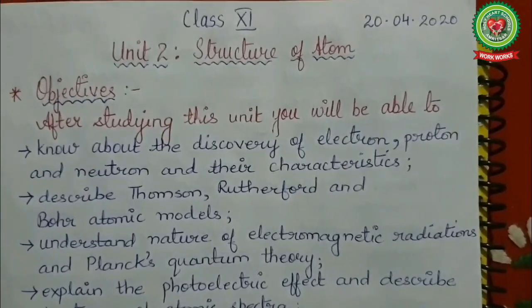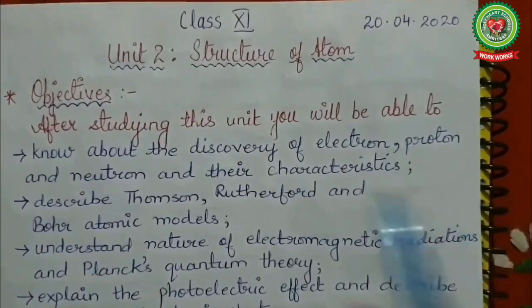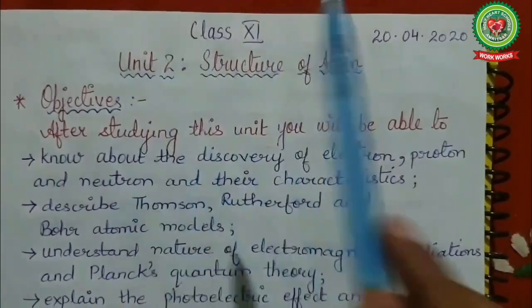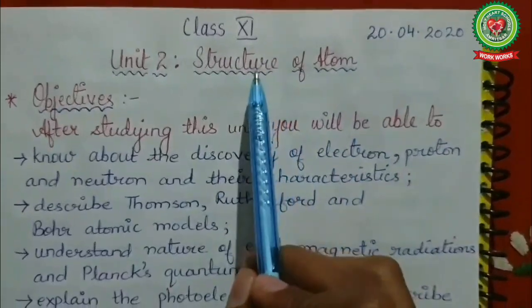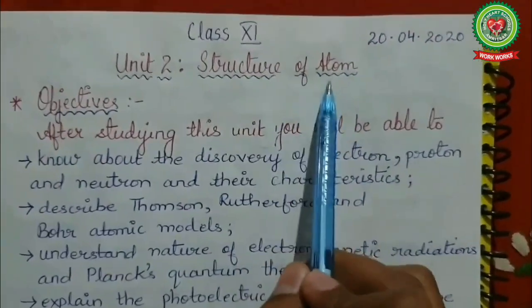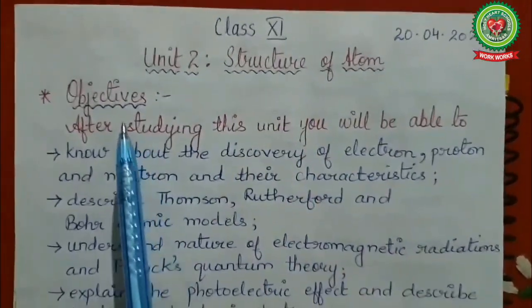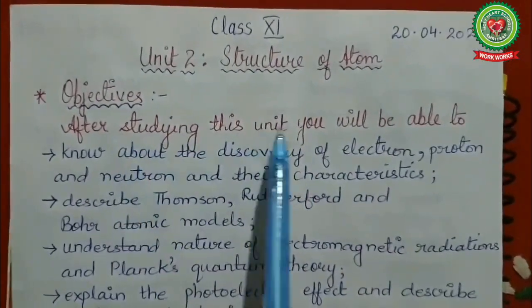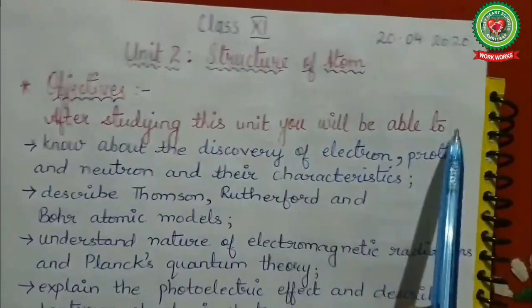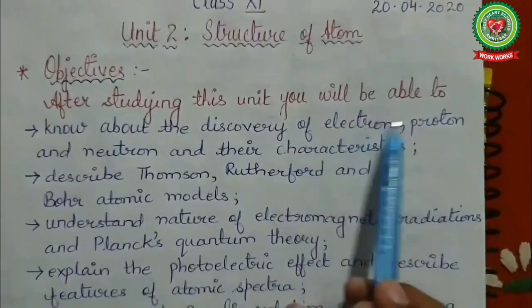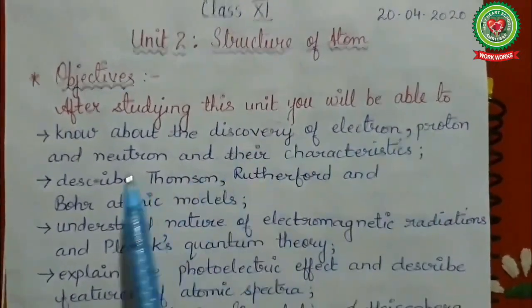Good morning students. Today we are going to start with Unit 2 of Chemistry. The chapter name is Structure of Atom. In this chapter, after studying this unit, you will be able to know about the discovery of electron, proton, and neutron and their characteristics.